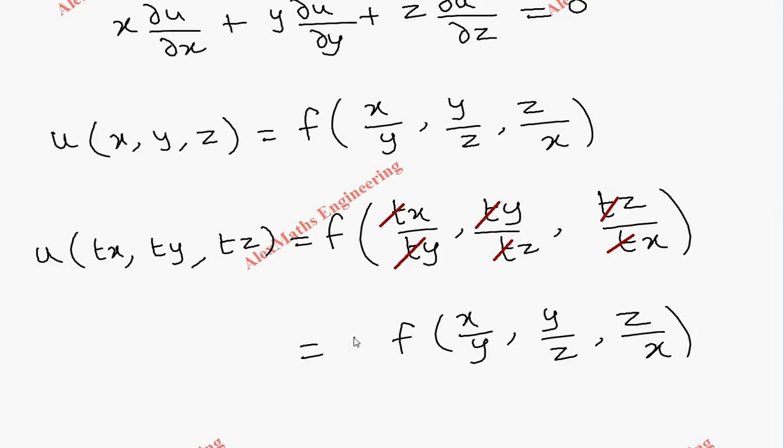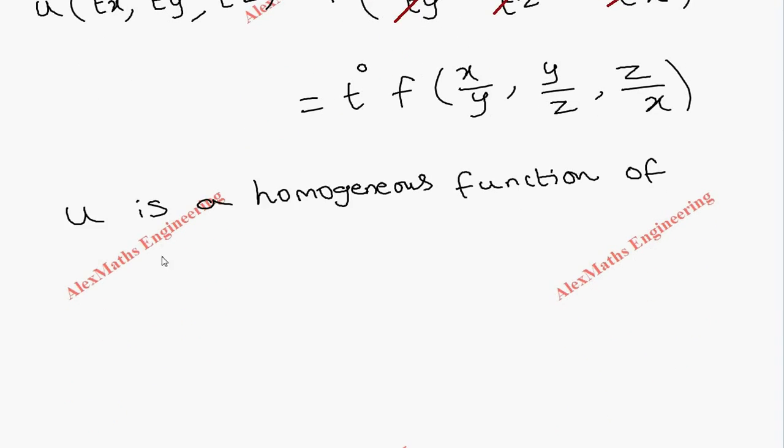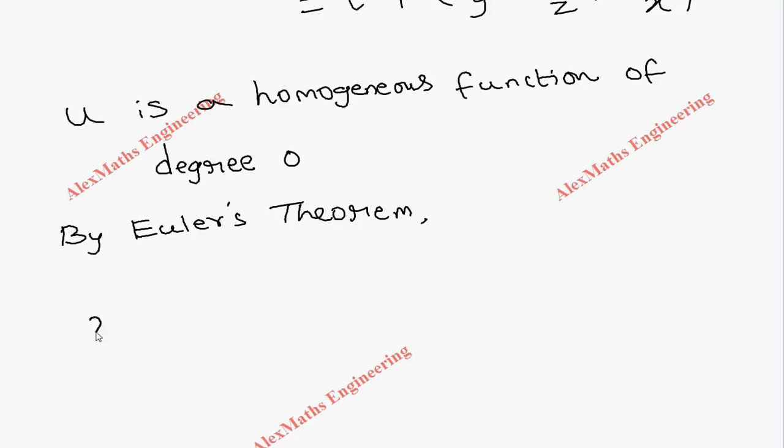Since there is no t term left, outside we can write t^0. From this, it is clear that it is a homogeneous function of degree 0. By Euler's theorem, we have x